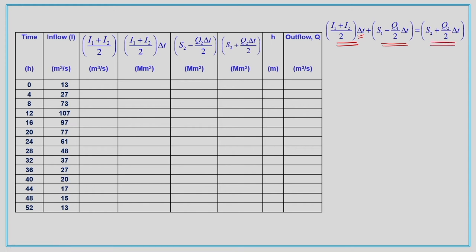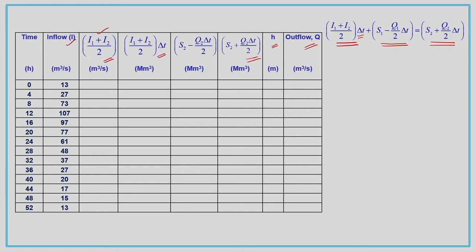We calculate the column for (I1+I2)/2 from the known inflow hydrograph, then multiply by ΔT to get the values in million meter cube. The initial elevation H is 51 meters and corresponding outflow Q is 27 meter cube per second; the elevation, H, and outflow Q for the initial condition are taken from the given data.